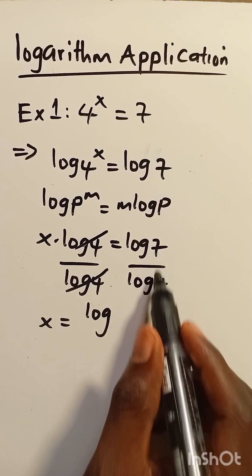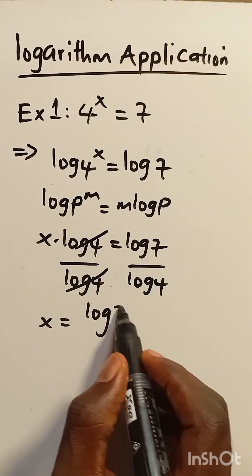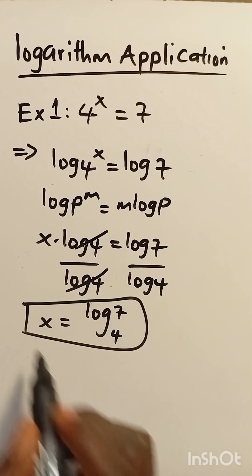When we have log 7 divided by log 4 can be written as log 7 in base 4. And this is the value of x.